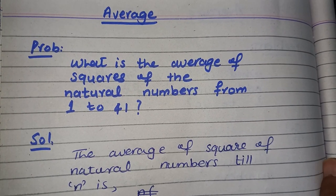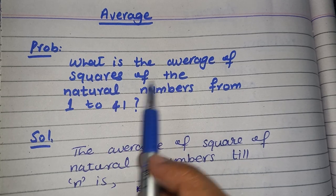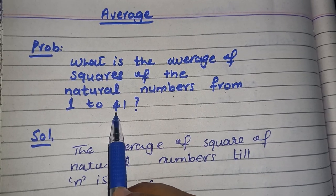Hello everyone, in today's lecture we will discuss an average problem: what is the average of square of the natural numbers from 1 to 41?